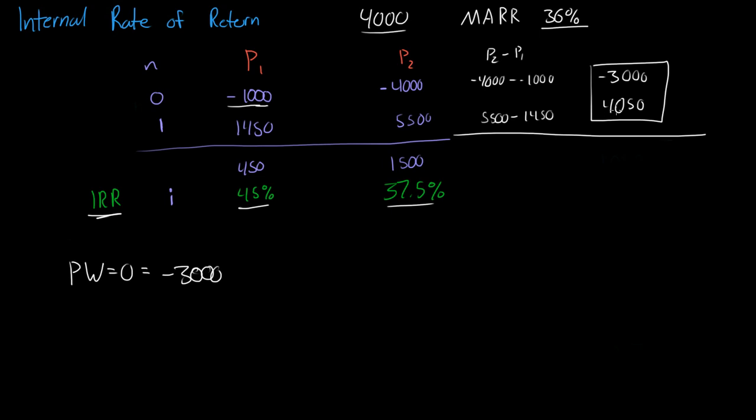What's the present worth of $4,050 in one year? We just add $4,050, and we multiply that by 1 plus I to the negative 1, because it's one year ahead, so it has some interest rate that it gained in one year. Now, let's solve this for I.